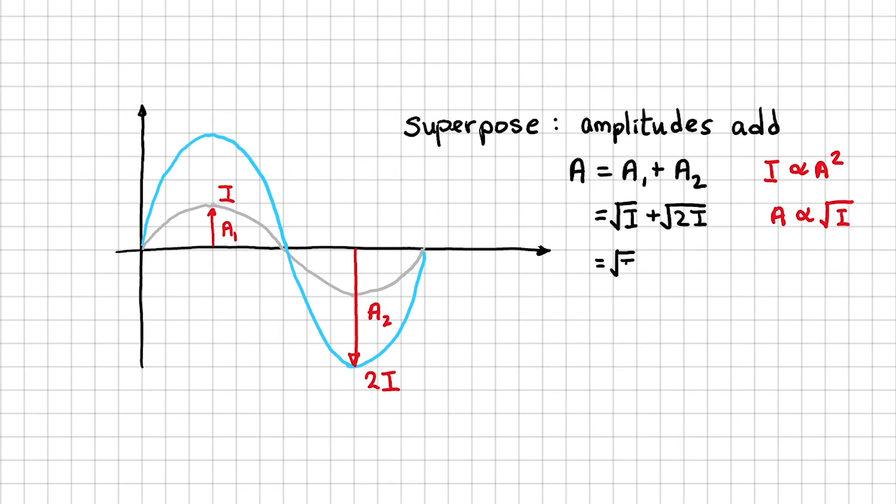I'll take the common factor out. This is the resultant wave's amplitude. I want to turn this back into intensity because that's what the question is looking for. So using this relationship again, I now square this. Let's check our answer.